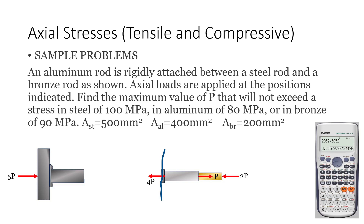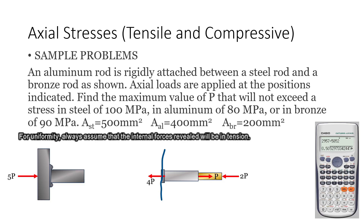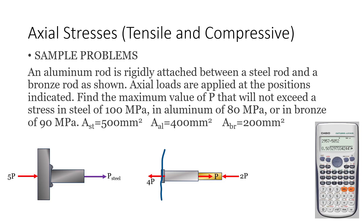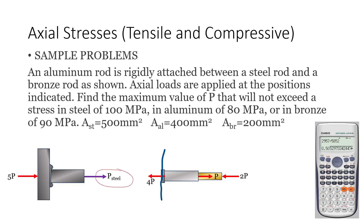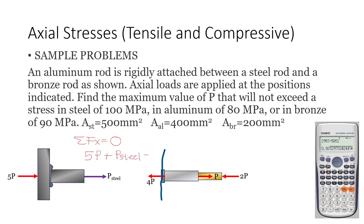Whether you solve the force in the member considering the left part or the right part of the section, you should get the same value — this is how you can check. To maintain equilibrium, we have a reactive internal force which we assume is in tension. This is P_steel because this is the axial force in our steel member. We can solve this by summing up forces horizontal: summation of forces along x equals zero. We have 5P plus P_steel equals zero, so P_steel equals negative 5P.